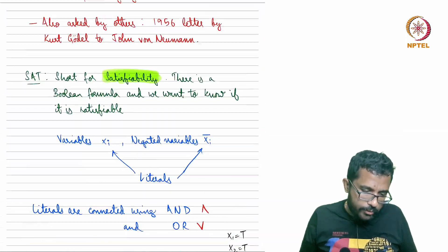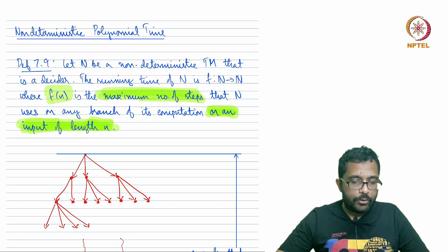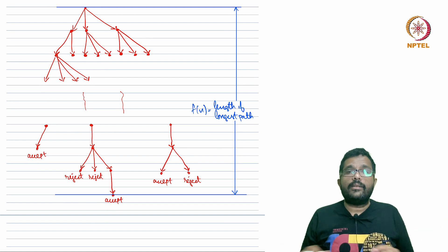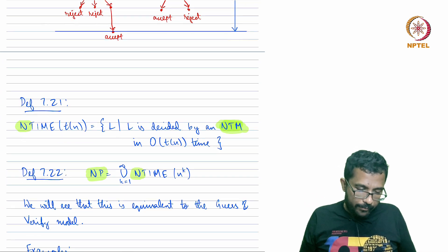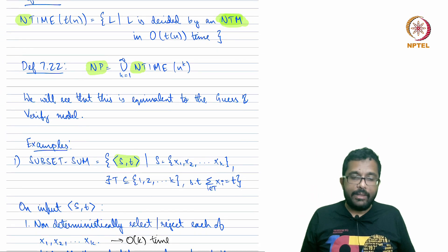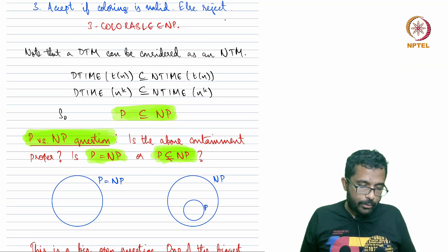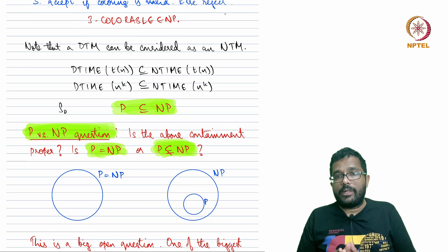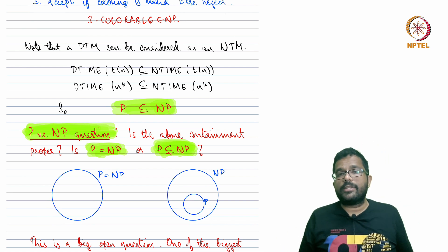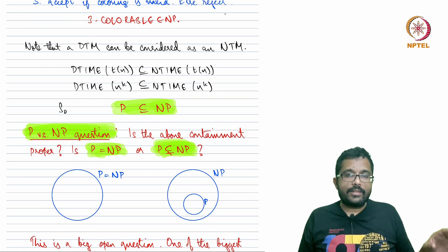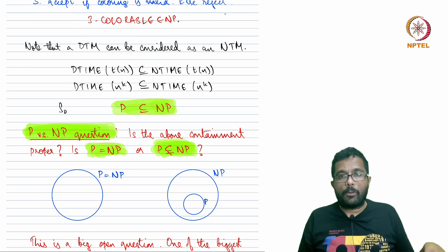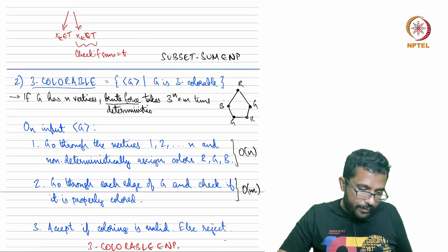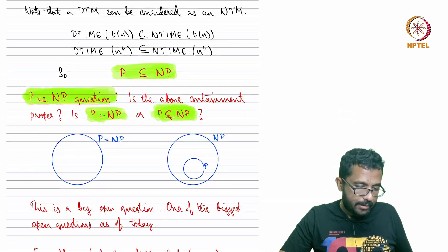To summarize: we discussed how to measure time complexity for a non-deterministic Turing machine — the length of the longest computation path over all inputs of the same length. We defined NTIME(T(n)) and NP, discussed the P versus NP question where P is the class of languages decidable by a deterministic Turing machine in polynomial time, and saw examples: subset sum, 3-colorability, and SAT.